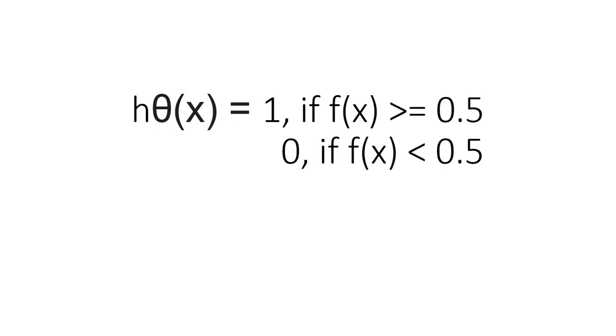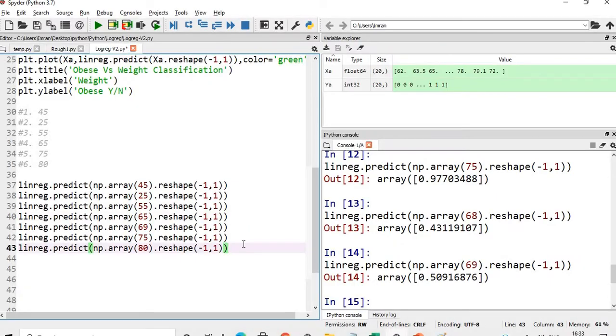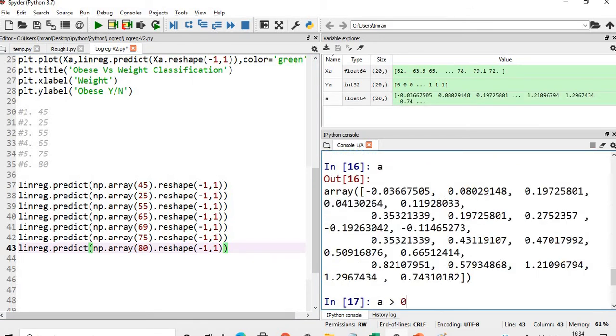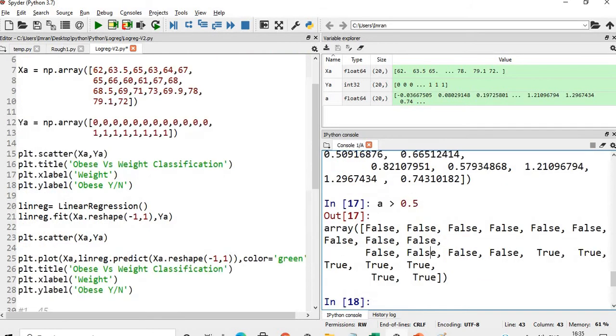When discussing this, let's come to this function. If h theta x, the function y value, is greater than 0.5, then it will be classified as 1. If it is less than 0.5, it will be classified as 0. Till here everything is being classified correctly.